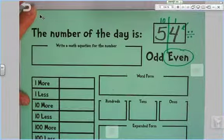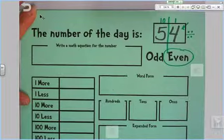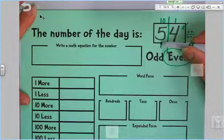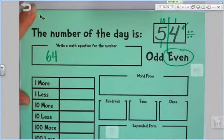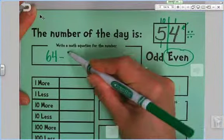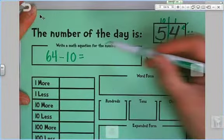Alright, so can we come up with a math equation for the number 54? Well, let's see if we can do 10 more than 54. So 54 plus 10 more. I'm going to add one group of 10 here. 5 plus 1 is 6, so 64. We're going to start with 64 and we're going to do a little subtraction today. So we just added a group of 10. So what if I said 64 minus the 10 I added? What am I going to get? I'm going to get 54.